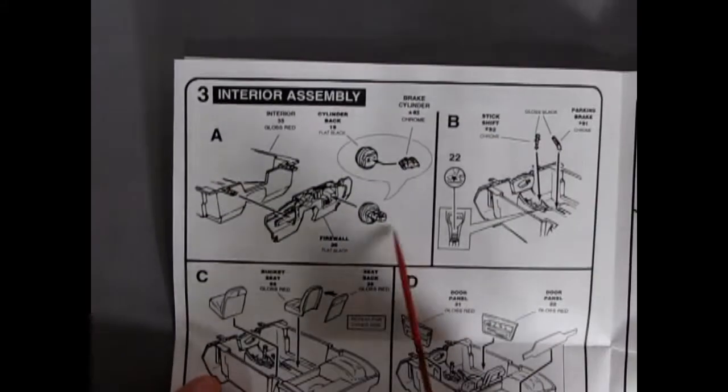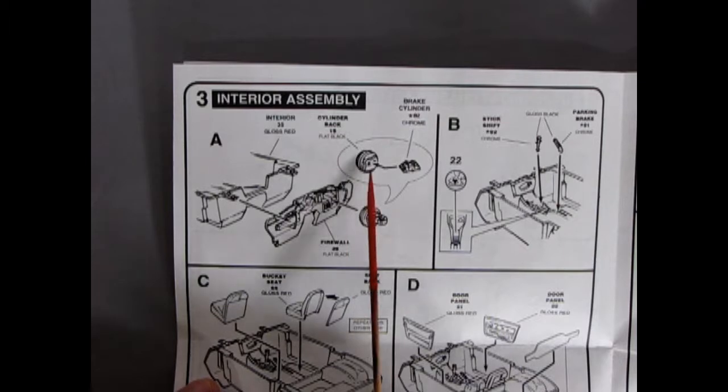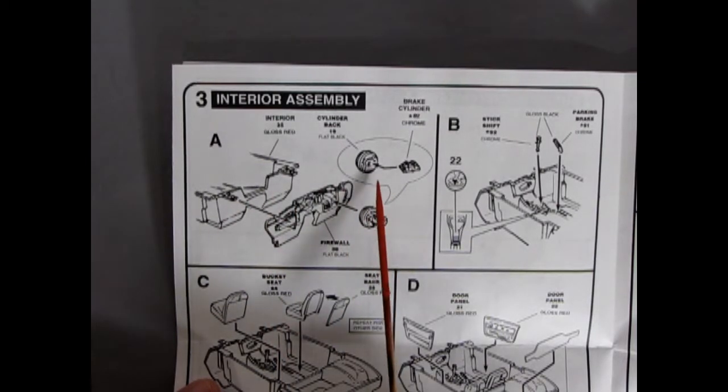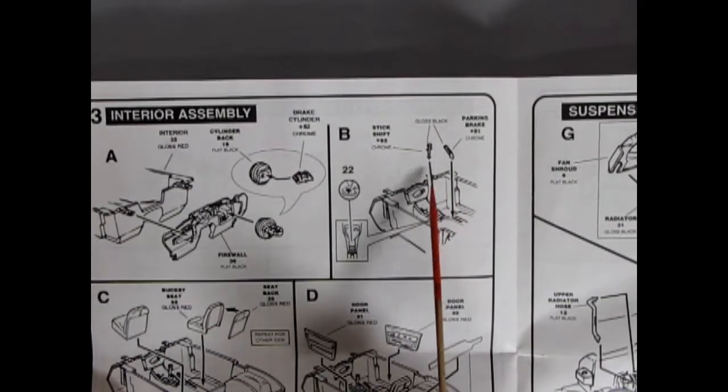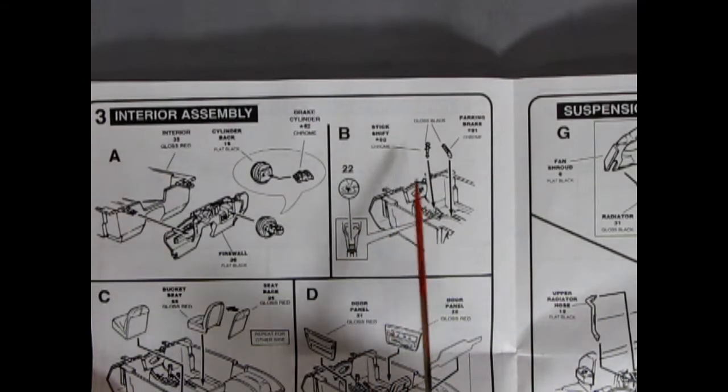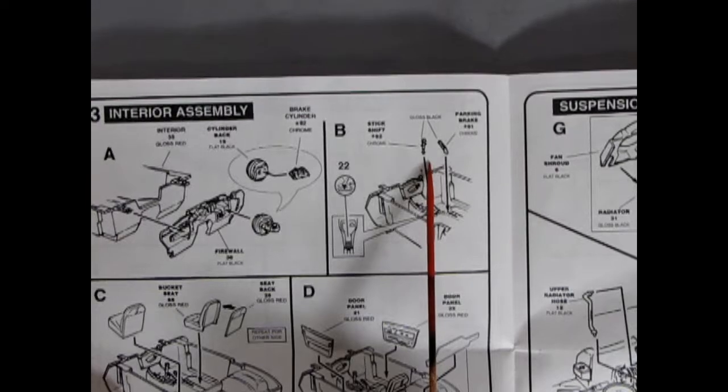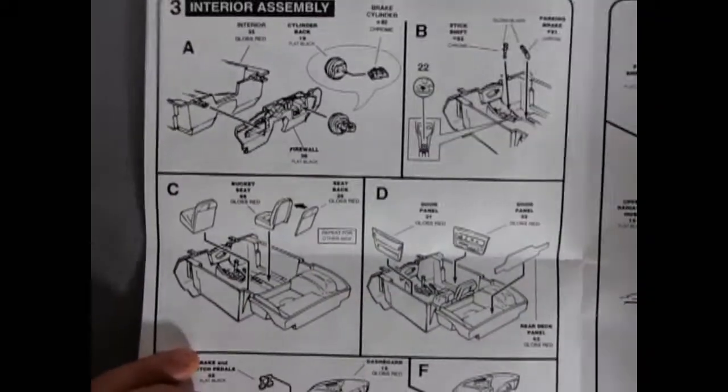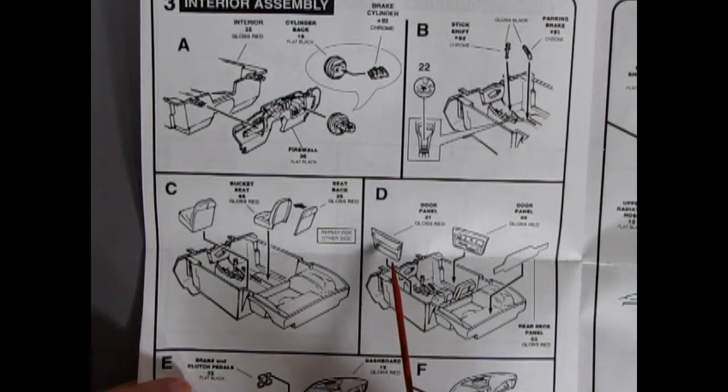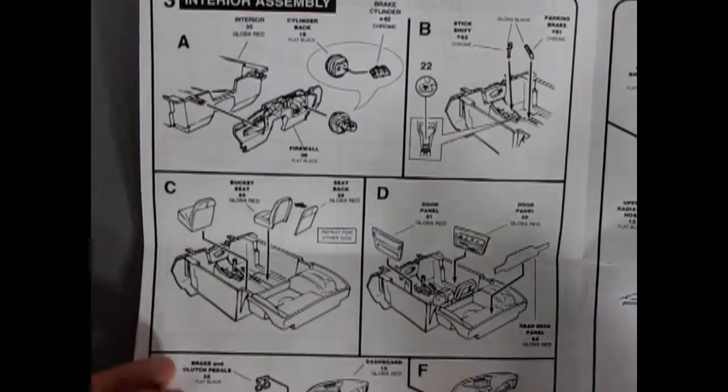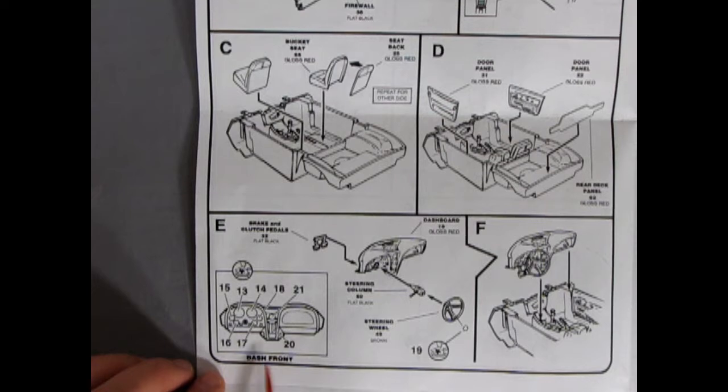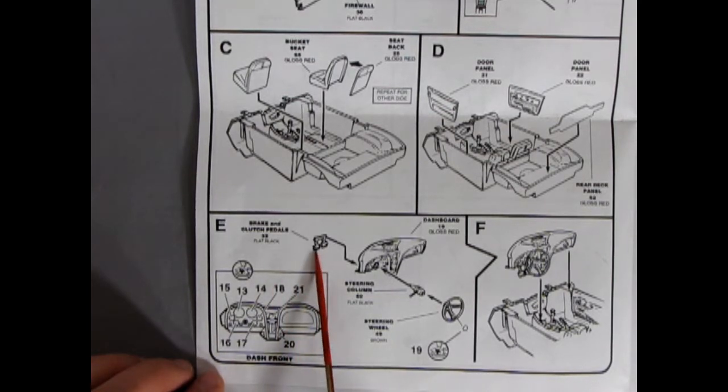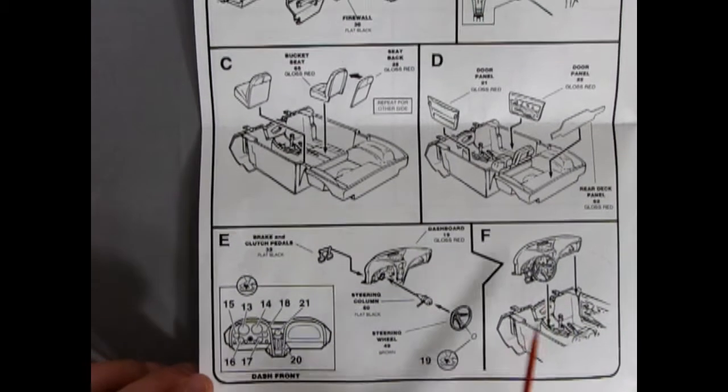Getting into page three, you can see our firewall going onto the body, or the interior tub, as well as the brake cylinder and the cylinder back for our master cylinder. Then you've got your decal going in here on the center console, as well as parking brake and your gear shift. The interior going together, your seats. It's got separate door panels and a rear deck panel.